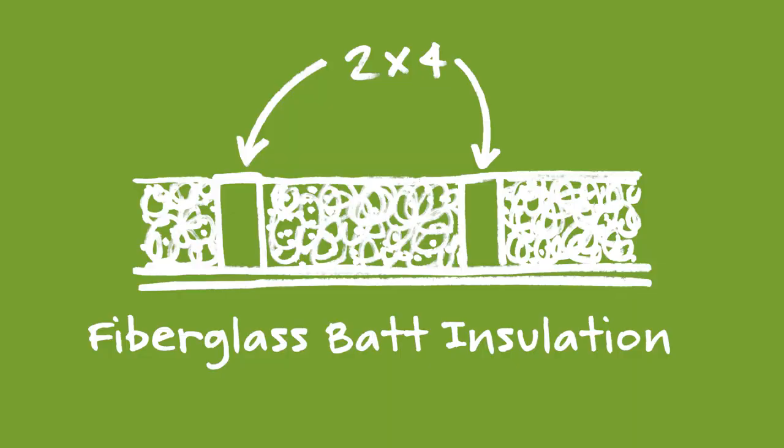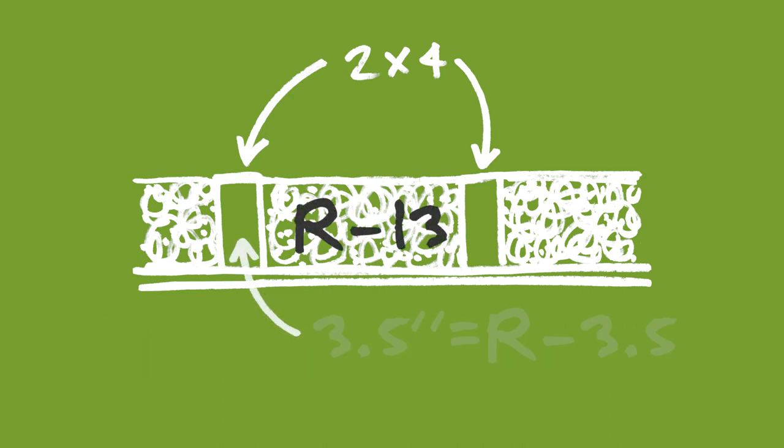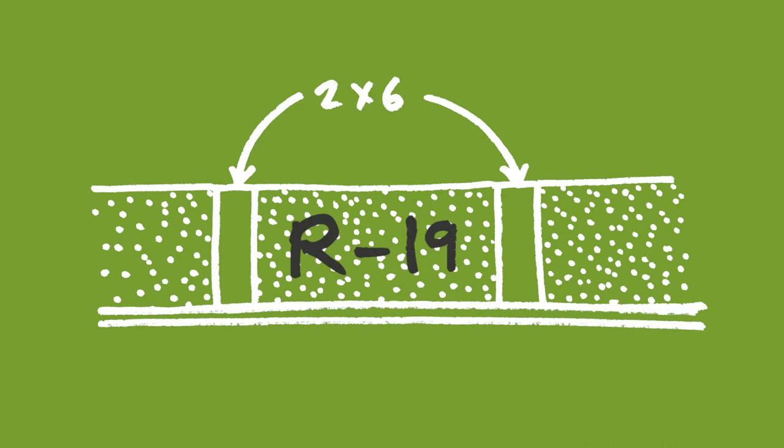A side benefit of having less lumber in the walls is that we can add more insulation, because the R-value of wood is only about one per inch. Even with batt insulation in a two-by-four wall, we get R13, but the wood at three and a half inches thick is only R3.5. So if we use less wood in the wall with a two-by-six wall, we have that much more space for our R19 spray foam insulation, making for a tighter and better building envelope from an insulative resistance standpoint.